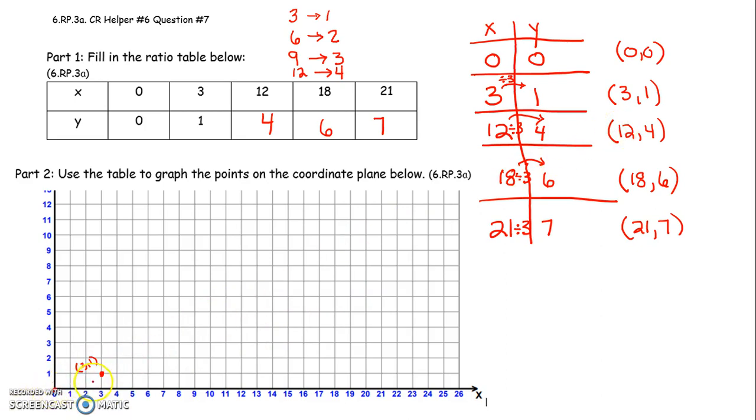12, 4 would be 12 to the right. 1, 2, 3, 4 up. Again, your scale will be different than mine. But this would be the point 12, 4. 12 right, 4 up.